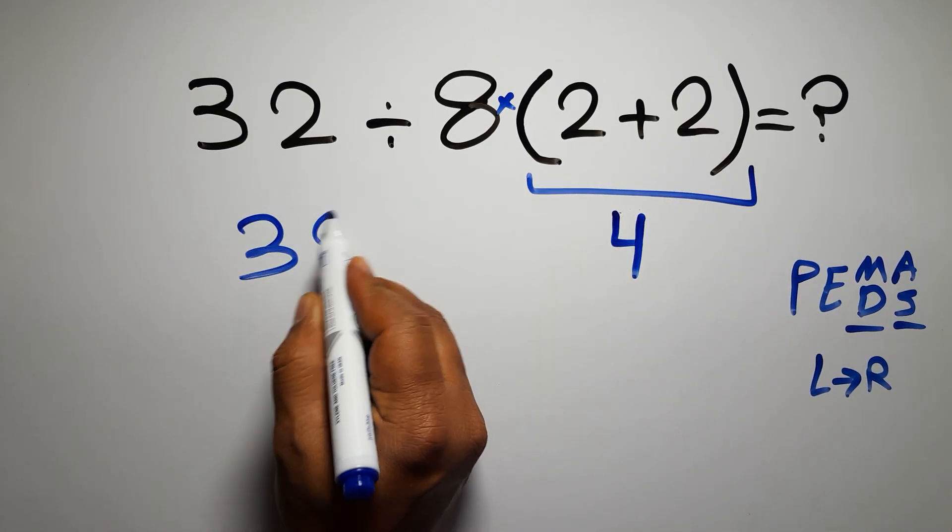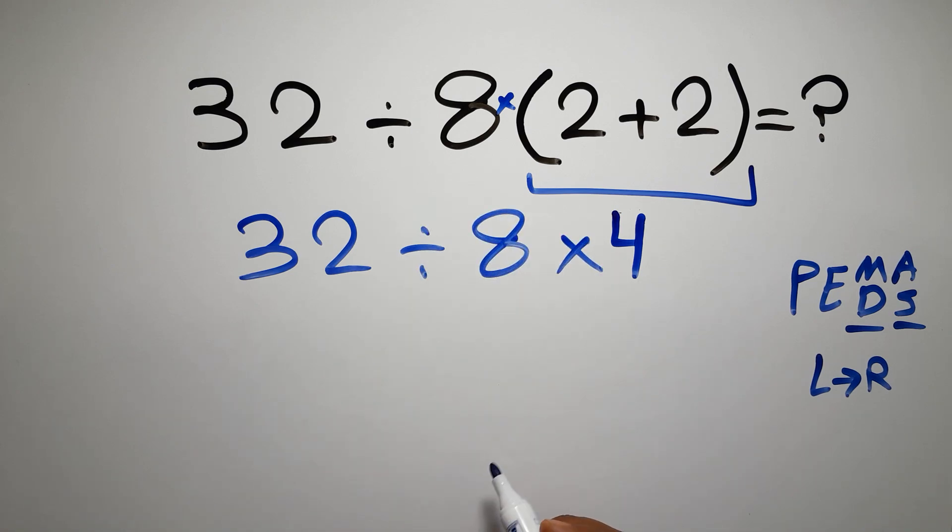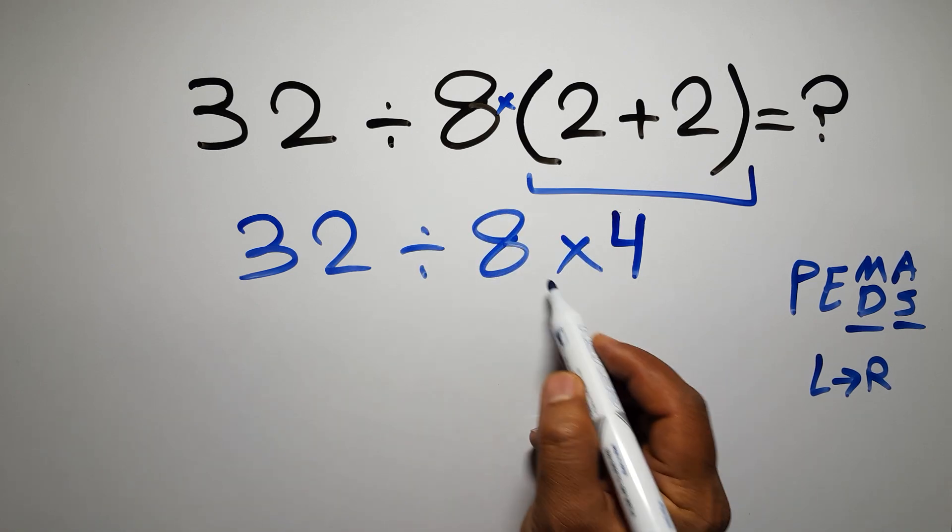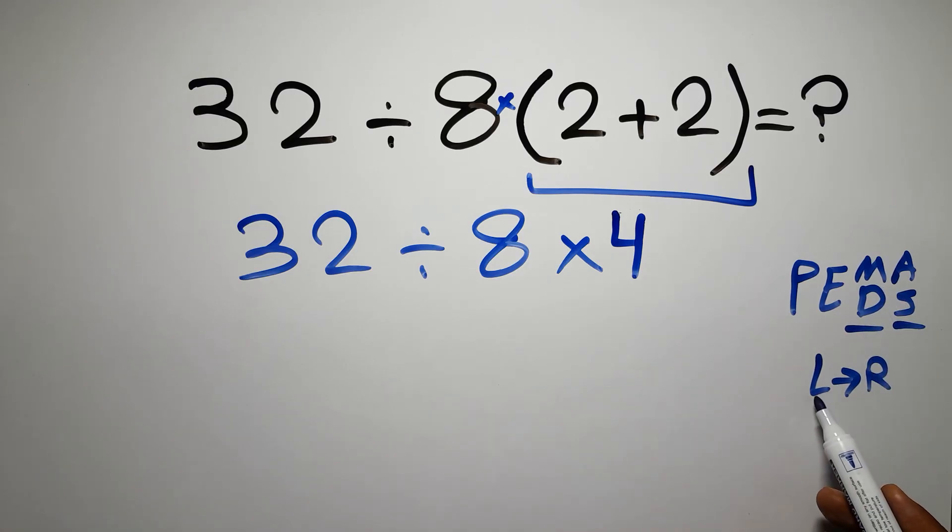So we have 32 divided by 8, then times 4. Now we have one division and one multiplication. As I said, multiplication and division have equal priority, and we have to work from left to right.